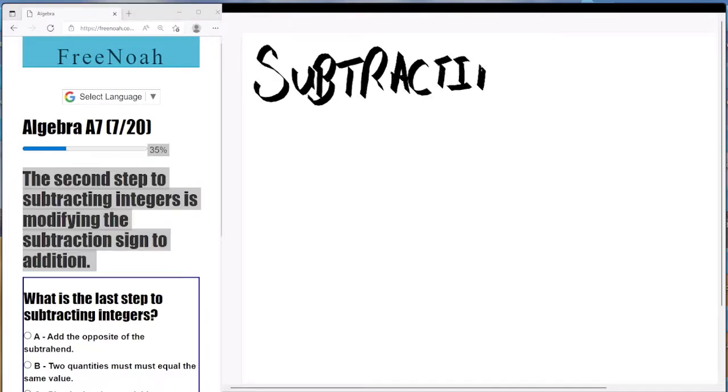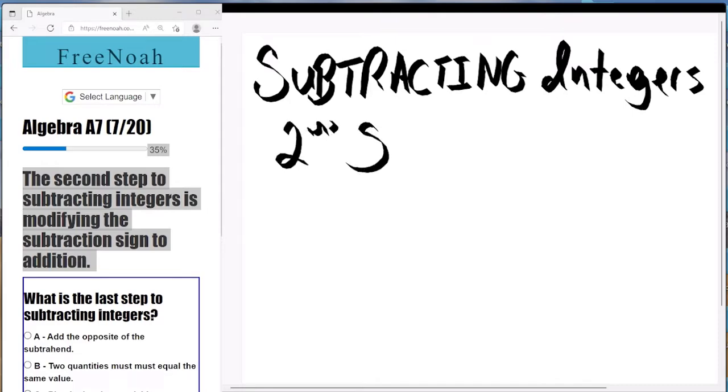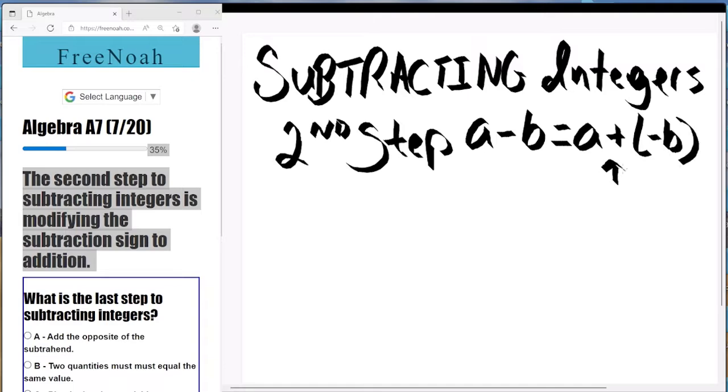but we are going to go ahead and complete steps 1, 2, and 3. So what is the second step to subtracting integers? Once again, we're subtracting, and there's going to be two integers, variables A and variable B. Here we go, and we got A minus B equals A plus negative B,